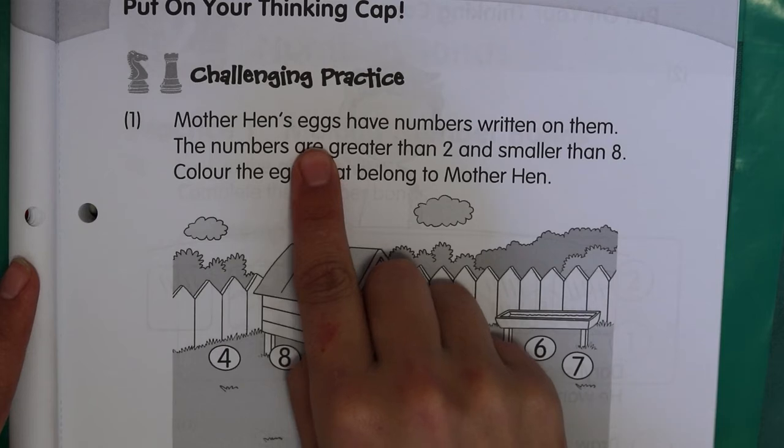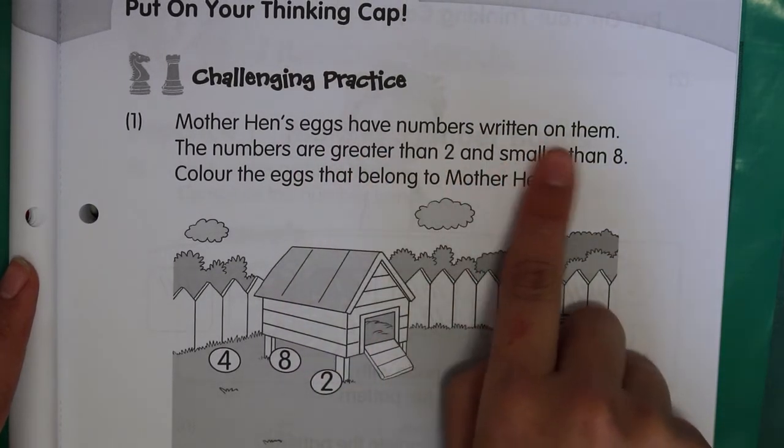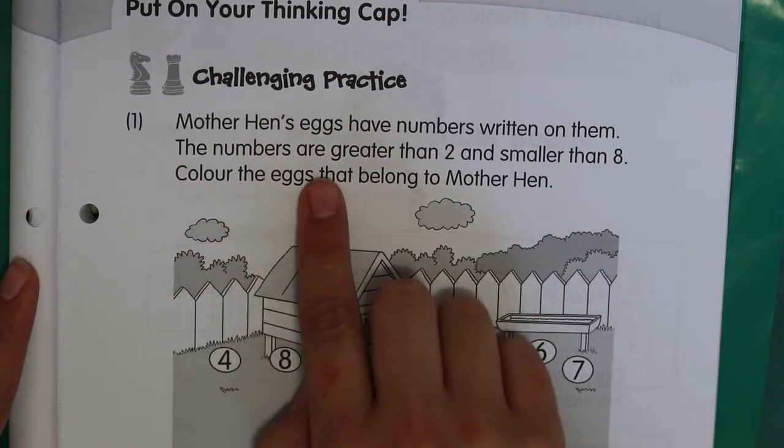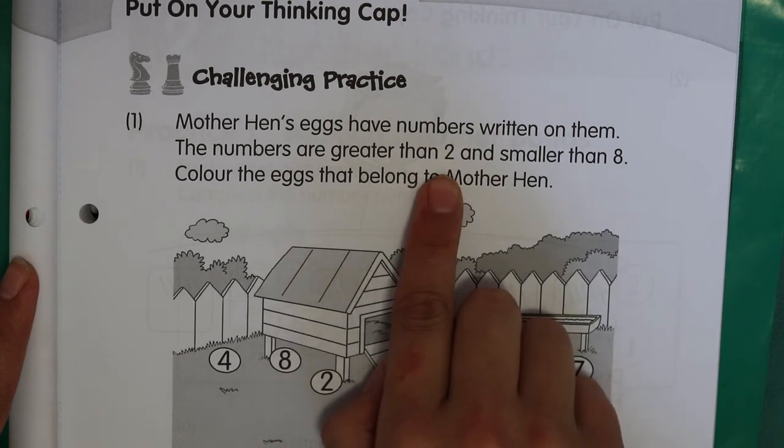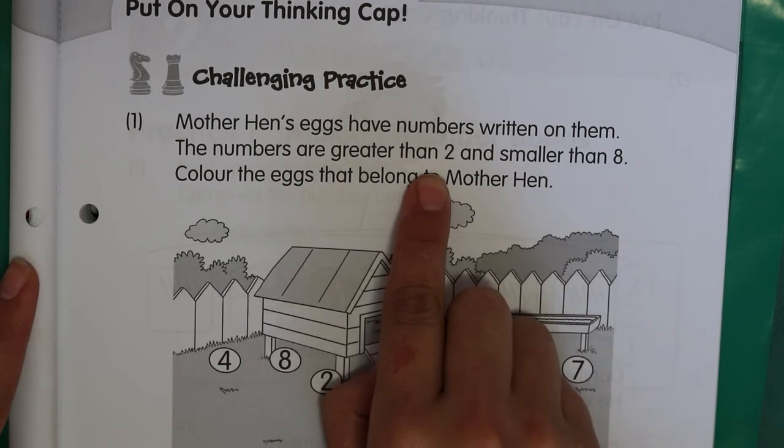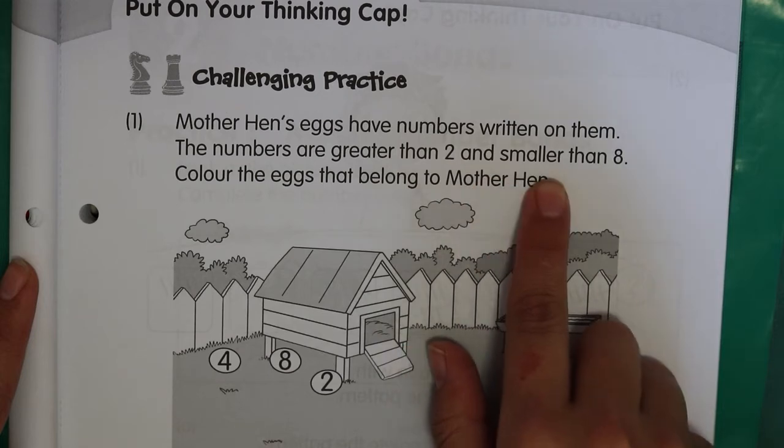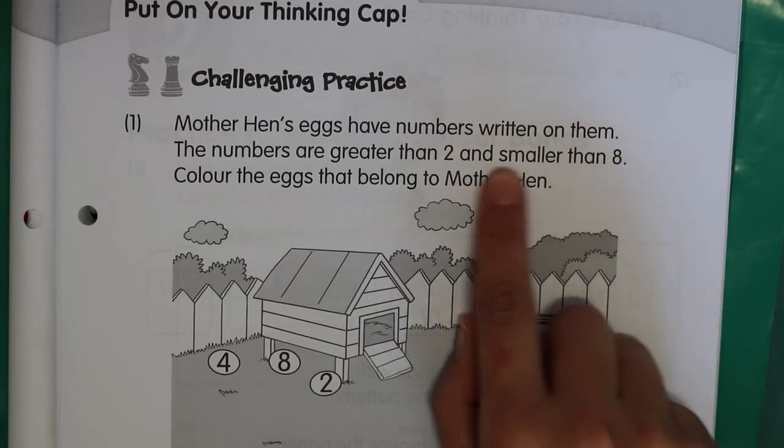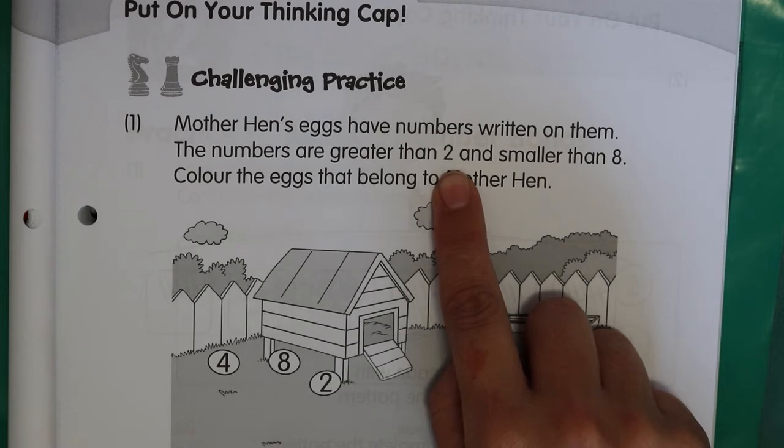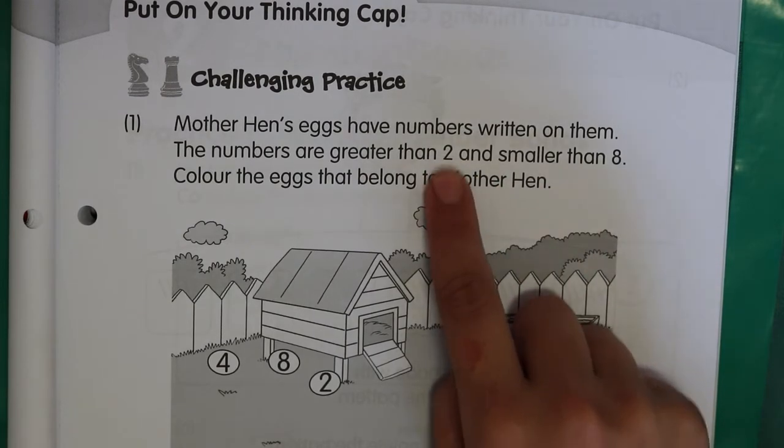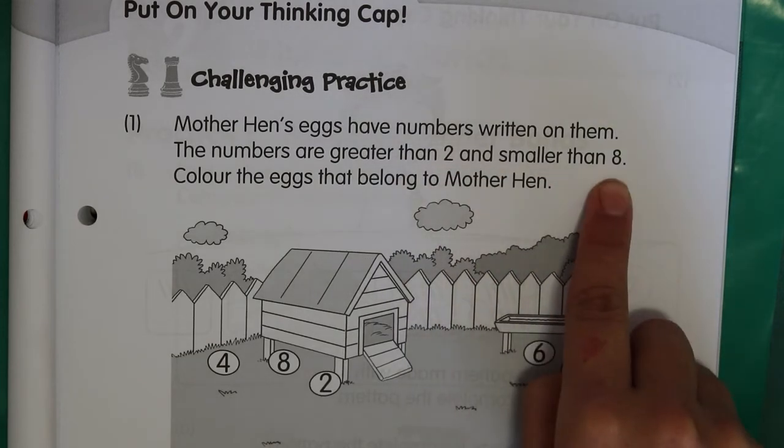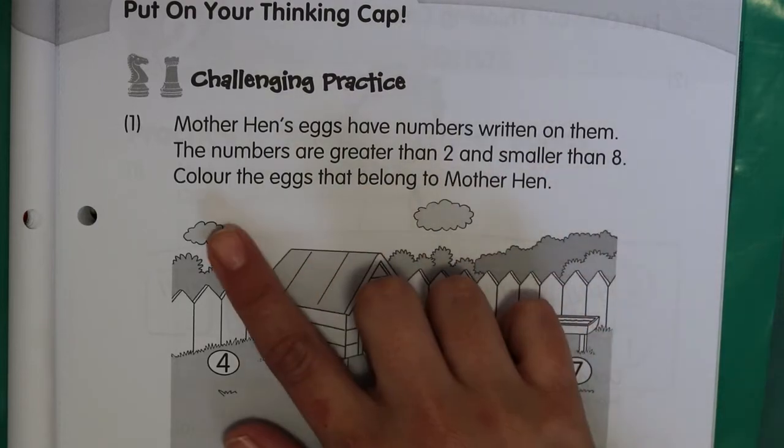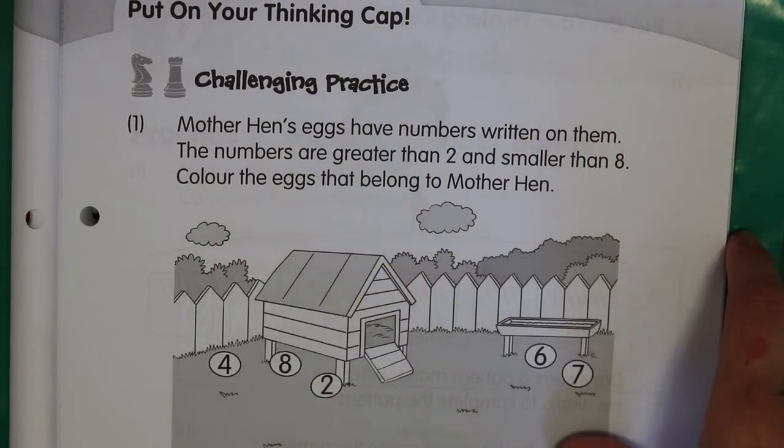Mother hen's eggs have numbers written on them. The numbers are greater than 2, so the numbers need to be bigger than 2, and smaller than 8. So the numbers need to be between 2 and 8. But you can't use 2 because it says greater than 2. So the numbers can be from 3 all the way to 7.